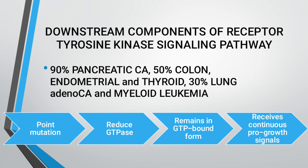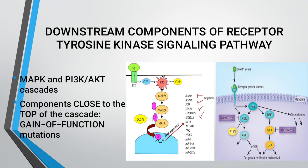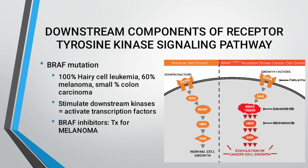RAS mutations are present in 50% of colon cancers and 30% of lung adenocarcinomas. In a point mutation, GTPase activity is reduced and RAS remains in the GTP-bound form — this produces a continuous growth signal. BRAF mutation is present in 100% of hairy cell leukemia, 60% of melanoma, and a small percentage of colon carcinoma. BRAF stimulates downstream kinases and activates transcription factors. BRAF inhibitors are used as treatment for melanoma.